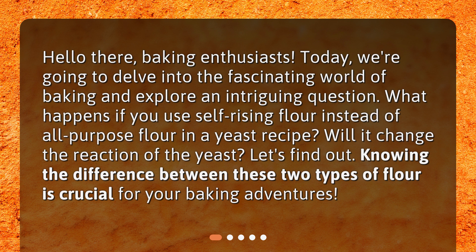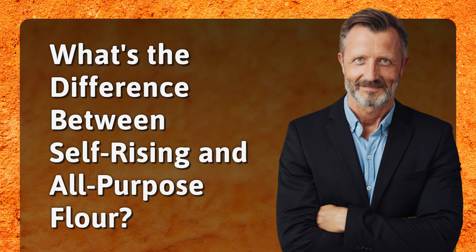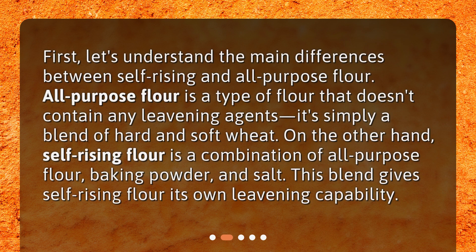Let's find out. Knowing the difference between these two types of flour is crucial for your baking adventures. What's the difference between self-rising and all-purpose flour? All-purpose flour is a type of flour that doesn't contain any leavening agents — it's simply a blend of hard and soft wheat. On the other hand, self-rising flour is a combination of all-purpose flour, baking powder, and salt.